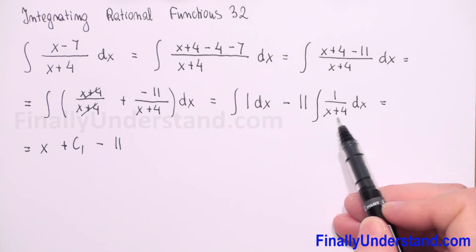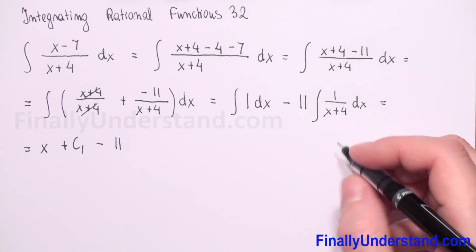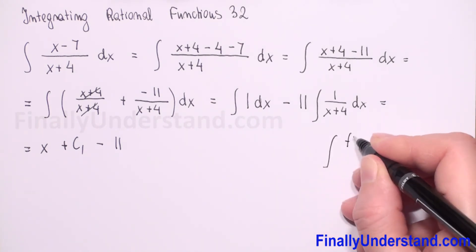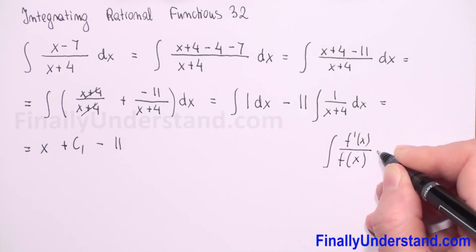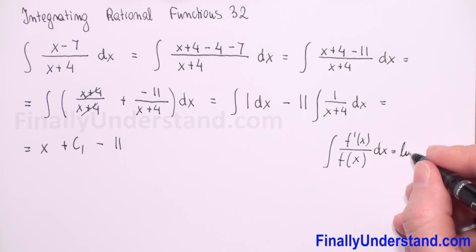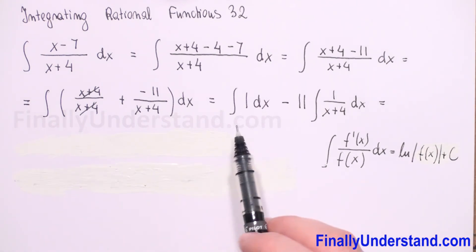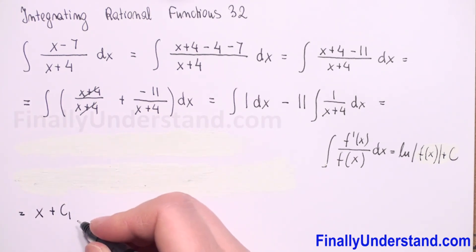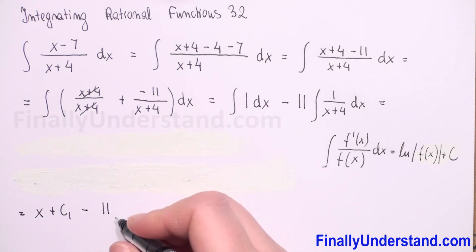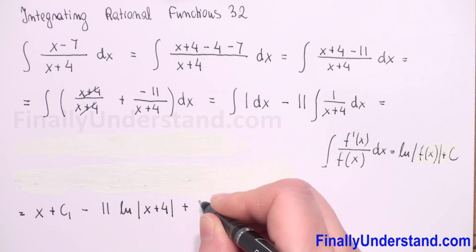The derivative of x is 1 and the derivative of a constant is 0, so 1 plus 0 is 1. We use the formula: the integral of f-prime of x over f of x equals the natural logarithm of the absolute value of f of x plus constant c. So the integral of 1 over (x plus 4) is the natural logarithm of the absolute value of x plus 4, plus constant c2.